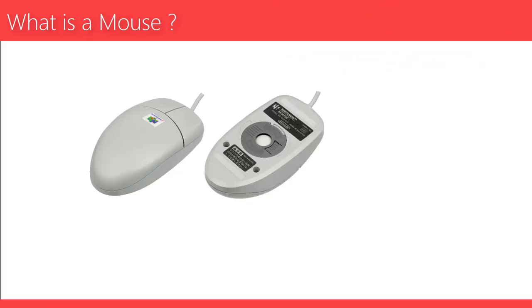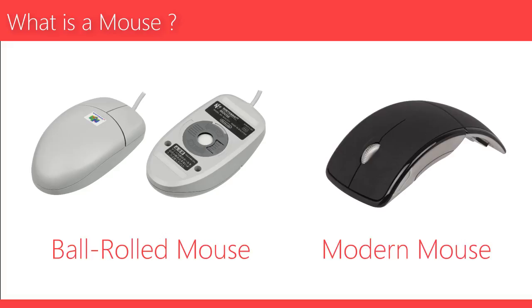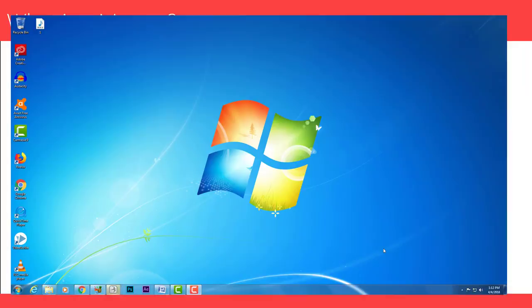Mouse originally used a ball rolling on a surface to detect motion, but modern mice often have optical sensors that have no moving parts.